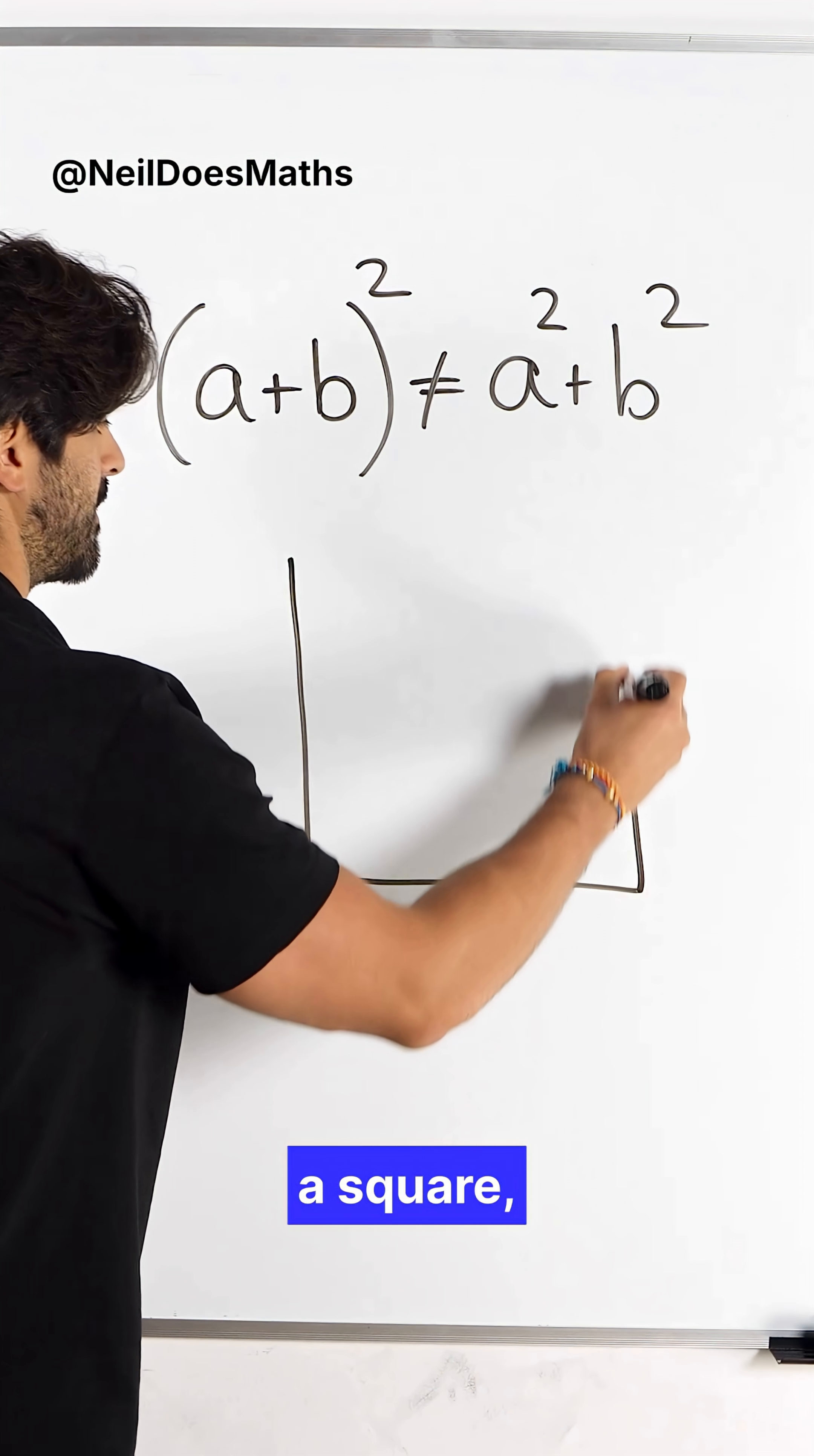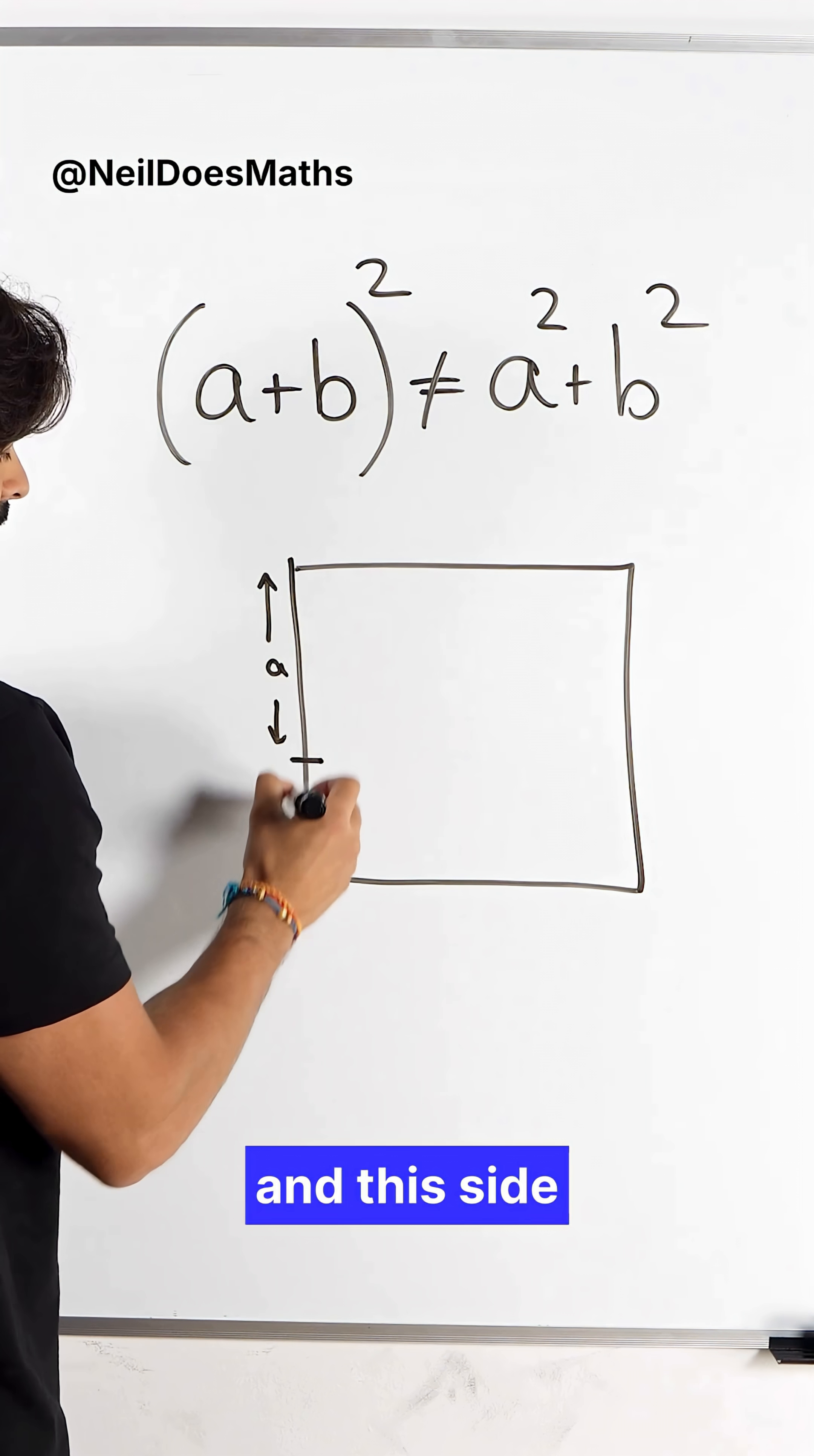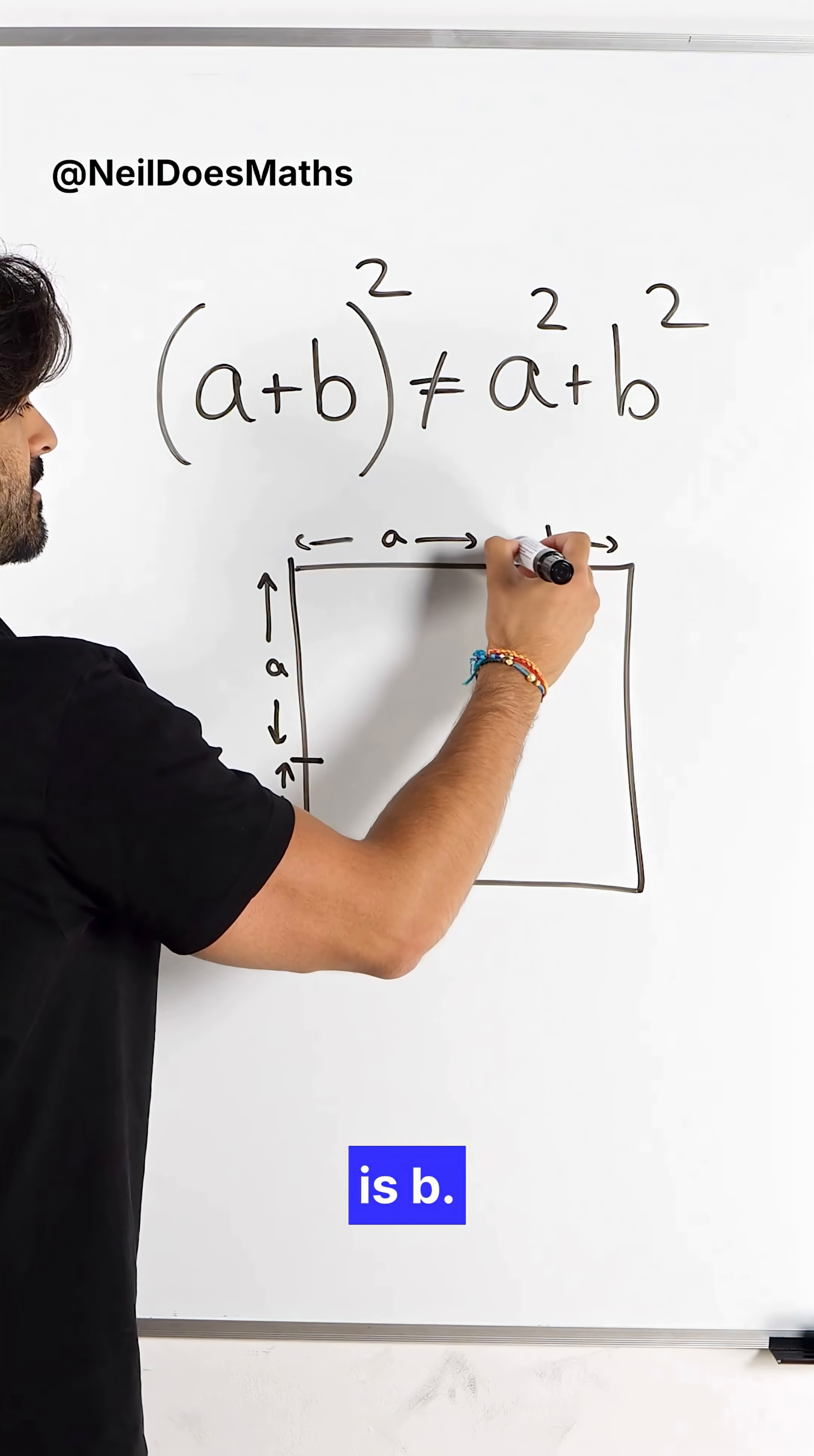So drawing a square, I'm going to split up this square into two side lengths a and b. So let's do it here where this side length is a and this side length is b, then doing the same thing on the other side. Here this side length is a and this side length is b.